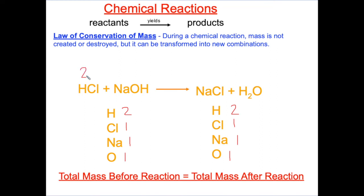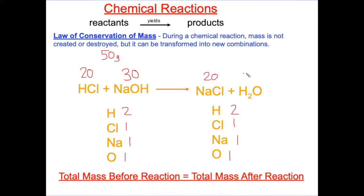For example, if we mix 20 grams of HCl and 30 grams of NaOH, that's a total of 50 grams in the reactants. The products must also equal 50 grams. So it could be 10 grams of NaCl and 40 grams of H2O, or 20 grams of NaCl and 30 grams of H2O, or 25 of each. Either way, the mass of the products combined needs to be 50 grams.